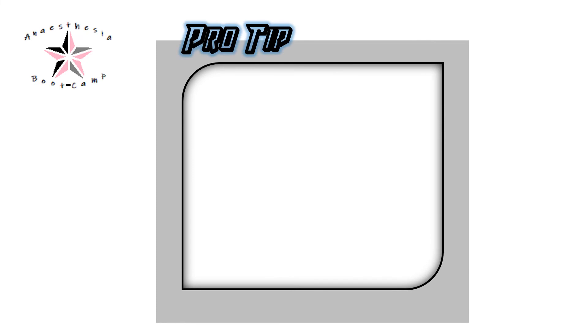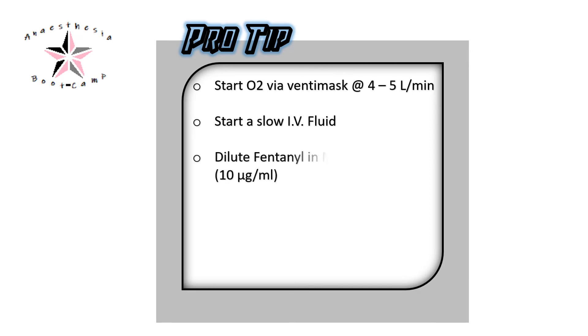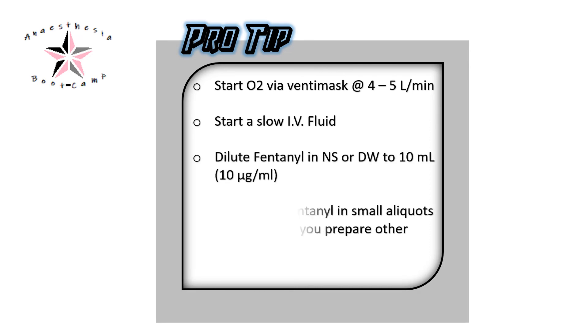To avoid rapid injection, administer diluted fentanyl in small aliquots of 1 to 2 ml as you prepare other drugs, while pre-oxygenating the patient at the same time.